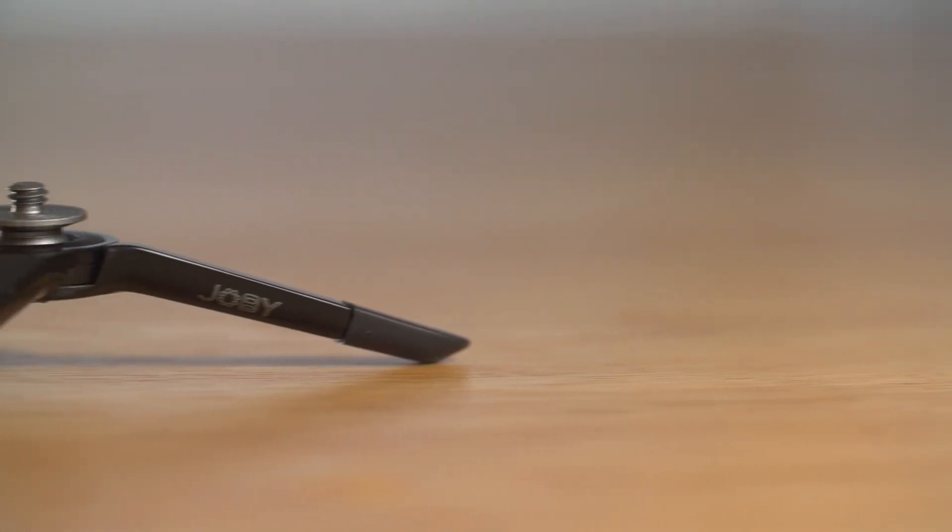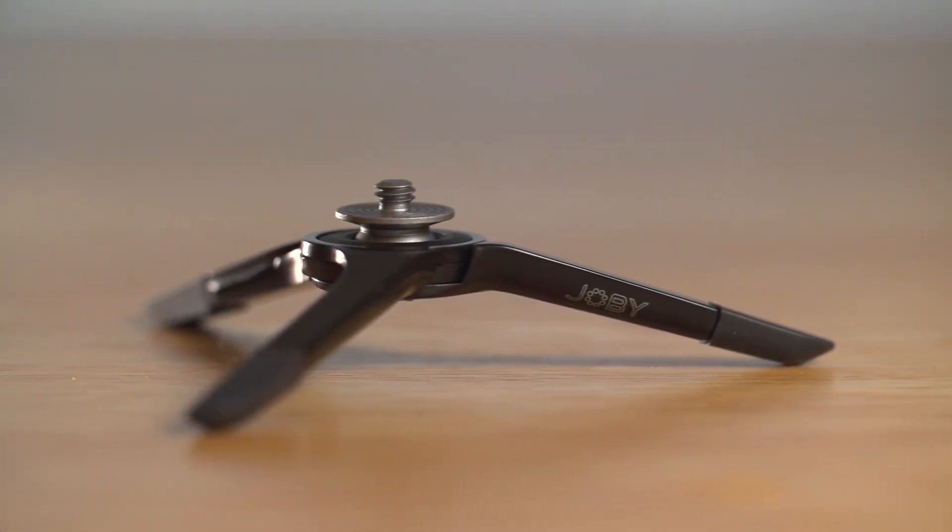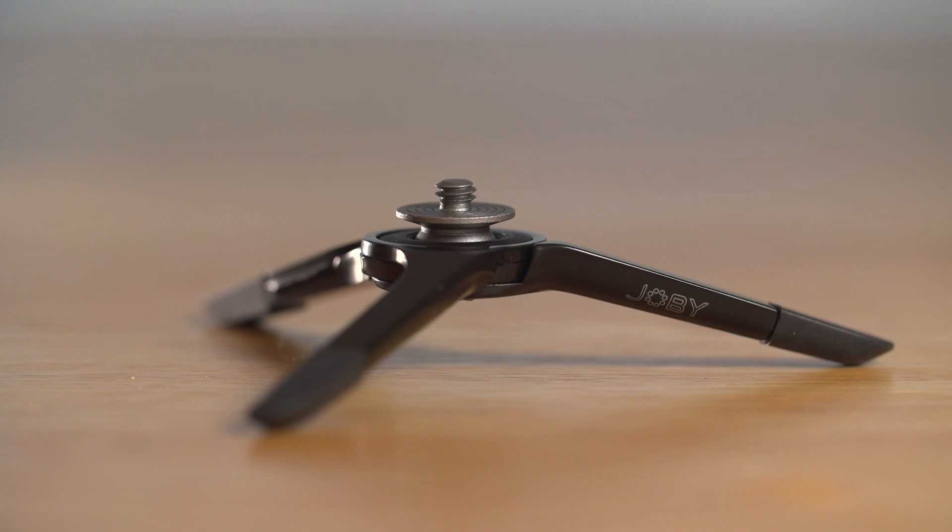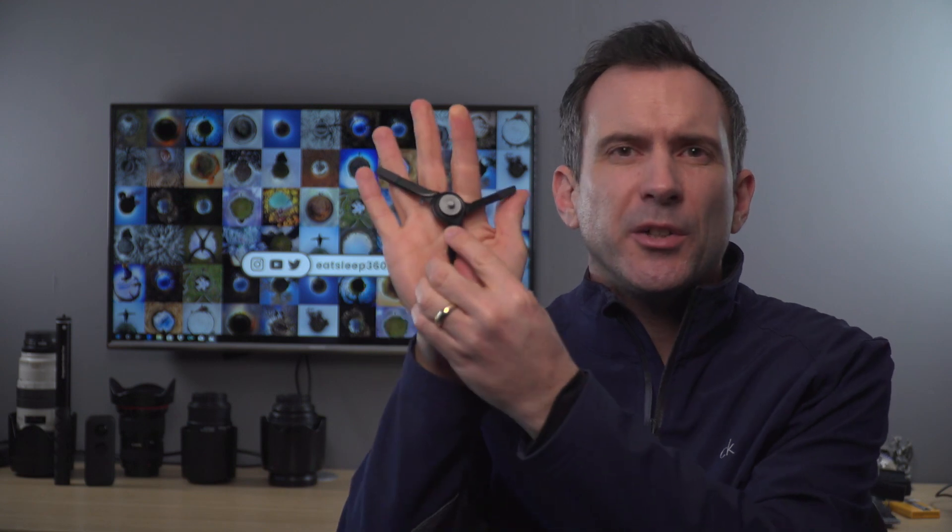The first tripod is the Joby Micro tripod. This tripod is really compact and it's the most portable and lightweight tripod that I've got. The actual footprint of this tripod is literally palm size. It's really tiny, so in your final shot it's barely noticeable.